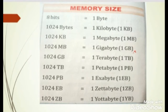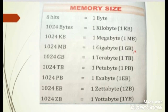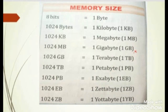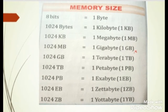1024 KB is equal to 1 megabyte, or 1 MB, meaning 1 MB space can store up to 1024 kilobytes. 1024 MB is equal to 1 gigabyte, or 1 GB, meaning 1 GB space can store up to 1024 MB of data. 1024 GB is equal to 1 terabyte, or 1 TB, meaning 1 TB memory space can store up to 1024 GB.